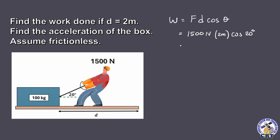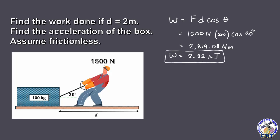Since the angle is in degrees, make sure that your calculator is in degree mode. So 1,500 times 2 times cosine of 20, this will give us 2,819.08 newton-meters. Using two decimal places, let us convert 2,000 to kilo, so we have 2.82 kilojoules by rounding to two decimal places. So this is our answer for the work done for this problem.